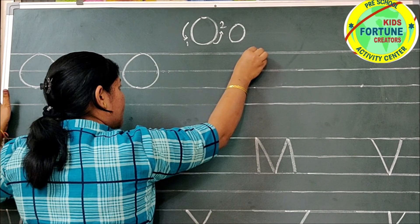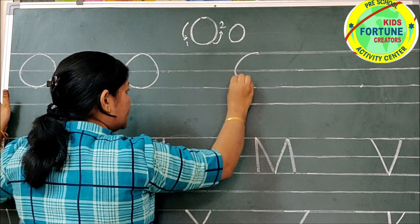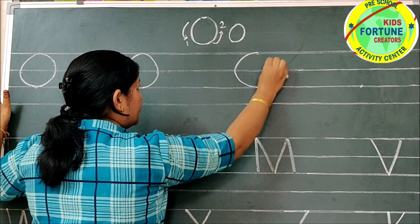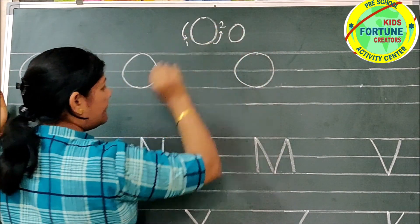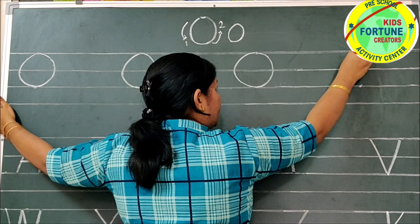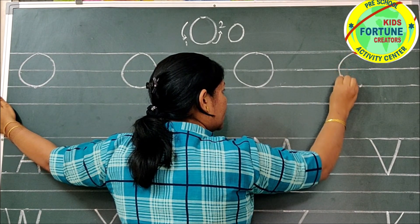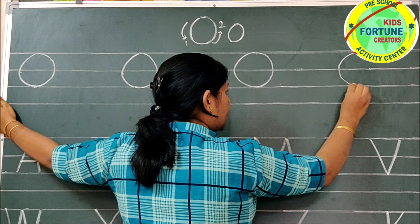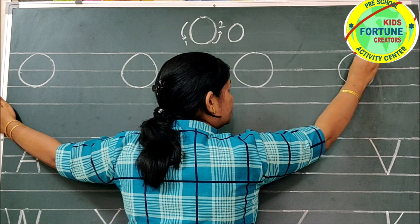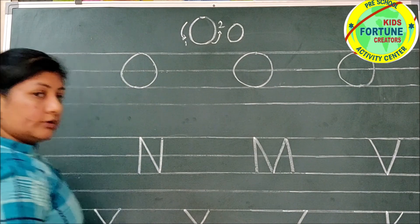Put your pencil on the papa line. Make a left curve and go down to the baby line. Touch the baby line and go up by making a right curve and go to the papa line. Letter O. Once again make a left curve and go up by making a right curve and go to the papa line. Letter O.